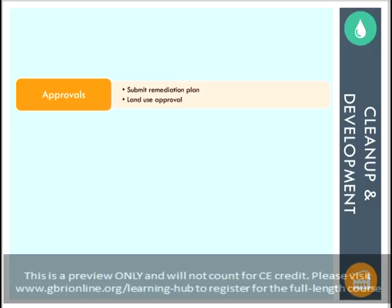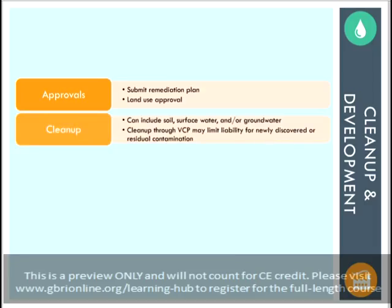Because many brownfields are in more developed areas, there may be city or local codes that need to be acknowledged, or there may be historical preservation protections in place that will need to be considered. Once all approvals have been secured, the site cleanup can begin. This can include cleaning of the soil, surface water, and ground water, and can also entail removing hazardous materials from the site. In cases where the developer performing the cleanup is not the same entity who originally created the pollution, a state voluntary cleanup program may be involved. This can often limit the developer's liabilities with regards to any contamination discovered after the cleanup process has begun, or residual contamination that remains after an honest effort at cleanup. The cleanup should be verified when complete by the body that originally designated the site as a brownfield or another approved regulatory body.